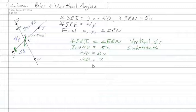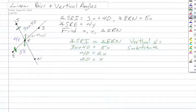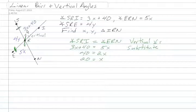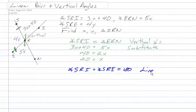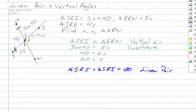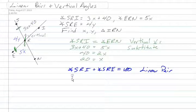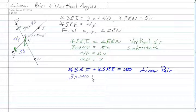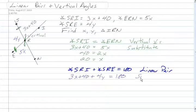From there, we go to the linear pair. We know that 3x plus 40 and 4y are a linear pair, so that means angle SRI plus angle SRE is equal to 180 because they're a linear pair. This means that 3x plus 40 plus 4y is equal to 180 by substitution.